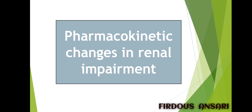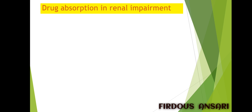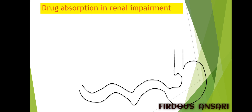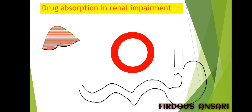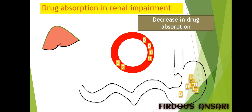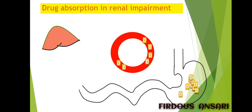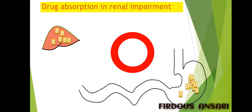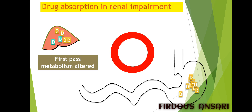Now we'll check out the pharmacokinetic changes in renal impairment across all four parameters: absorption, distribution, metabolism, and elimination. For drug absorption in renal impairment — suppose this is your gastrointestinal tract, this is your systemic circulation, and this is the liver — a decrease in drug absorption is seen. Regarding first pass metabolism, the drug moves to the liver where first pass metabolism takes place, but in renal impairment first pass metabolism is altered.